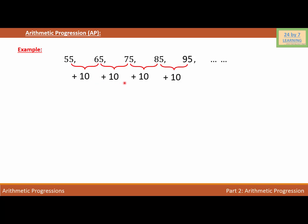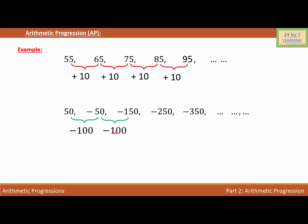Now let's consider another example. This is another sequence where the first term is 50, then negative 50, negative 150, negative 250, and negative 350. Between the first two terms, the difference is negative 100, because negative 50 minus 50 is negative 100. In the same way, the difference between each consecutive pair is negative 100. So, if I have to find the number after negative 350, I subtract 100, which gives negative 450.